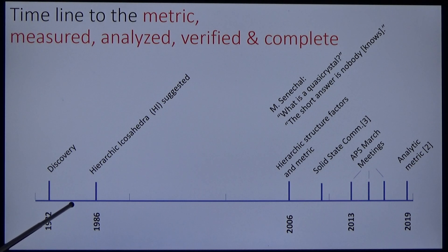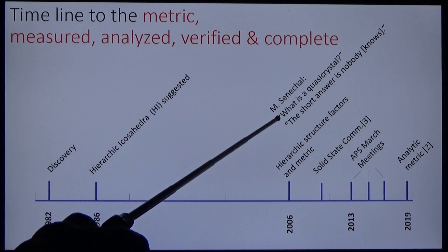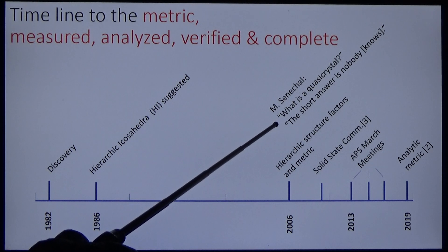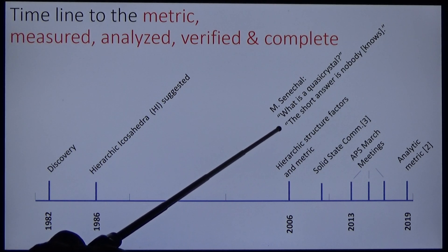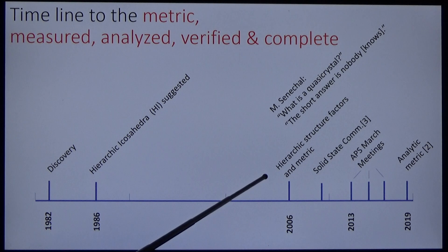The discovery was made in 1982, published in 1984 before my hierarchic icosahedral solution in 1986. After 20 years in the doldrums, Senechal gave a paper to the American Mathematical Society. What is a quasi-crystal? Nobody knows—she was mistaken. I have discovered hierarchic structure factors on a metric, and today I will give it to you measured, analyzed, verified, and complete.